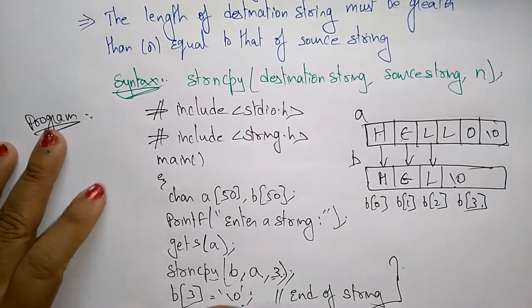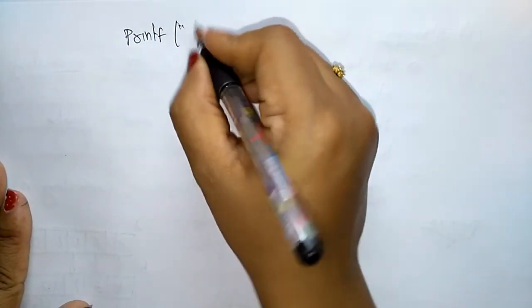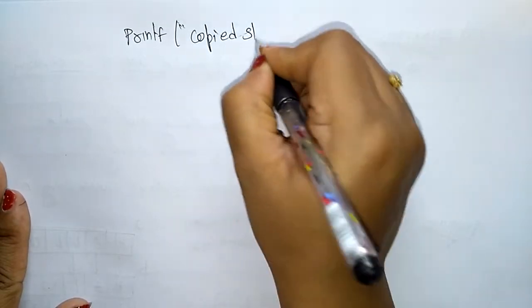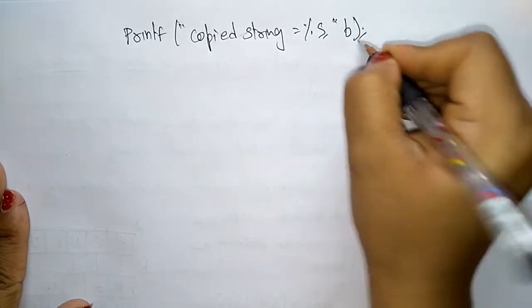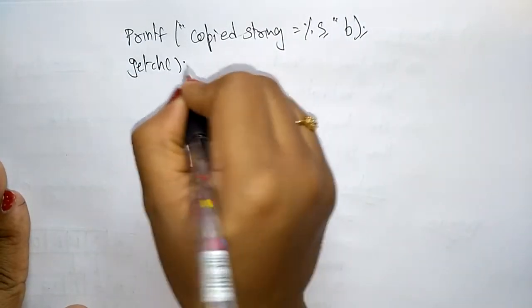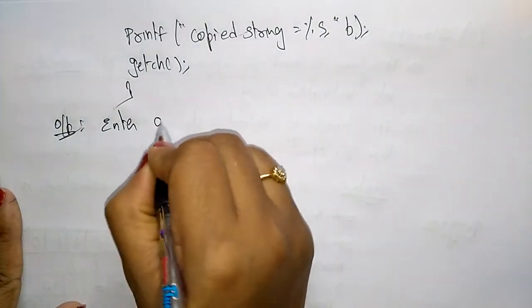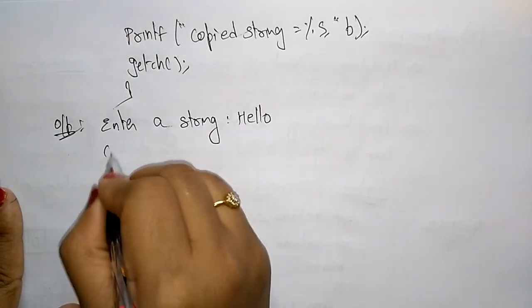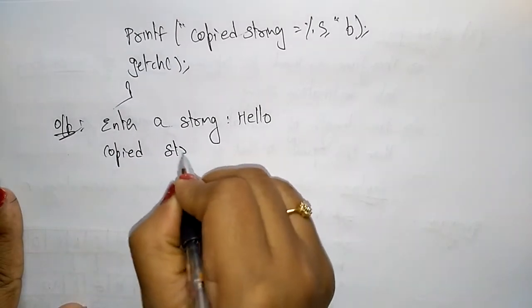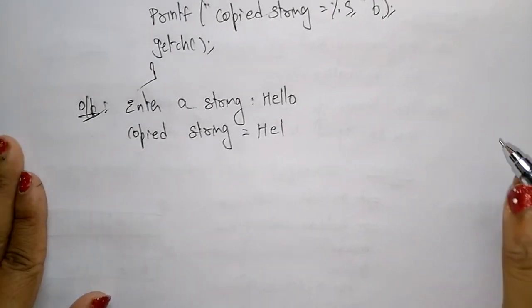Then we print the result with printf: 'Copied string is equal to %s', passing b, and getchar and close the main program. The output will be: enter a string — hello. Copied string is equal to H, E, L — only three characters.